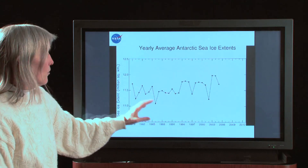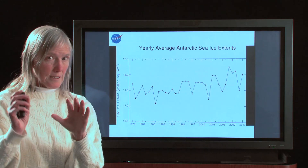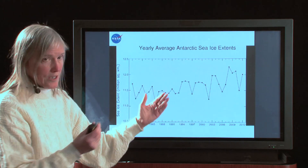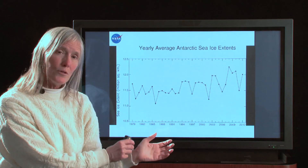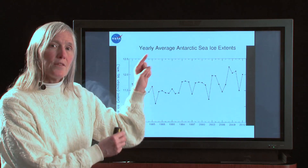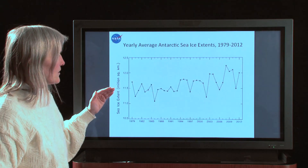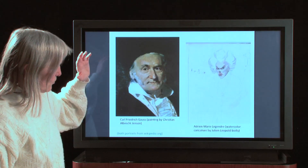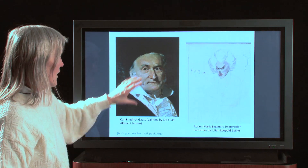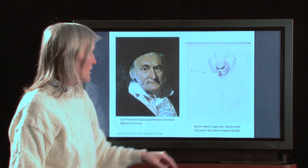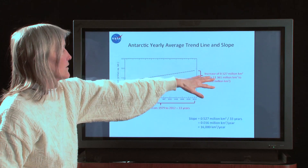Now you can see that overall there has been an increase. That becomes clear once that seasonal cycle, which had somewhat obscured the issue, is removed — you can see that overall the Antarctic sea ice has not been doing the same thing as the Arctic. The Arctic sea ice was decreasing; the Antarctic sea ice has increased. Once again we would like to get a line through it, so we use the same least squares method that was initiated a long time ago by Carl Frederick Gauss and Adrienne Marie Legendre. We get the least squares line through it, and then proceed to calculate the slope.